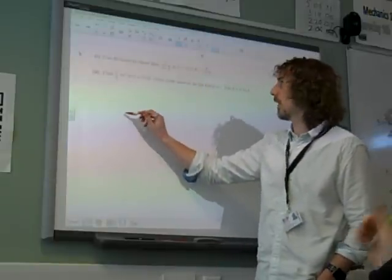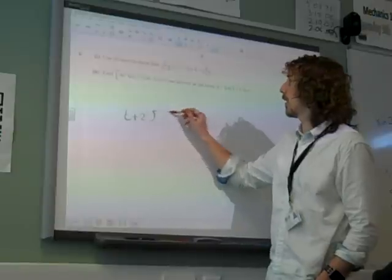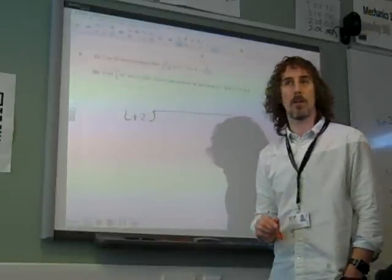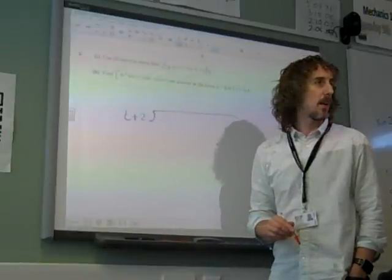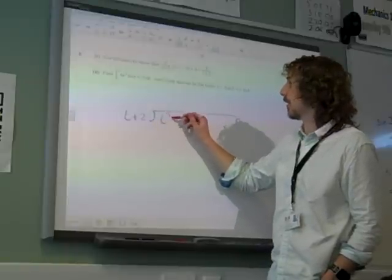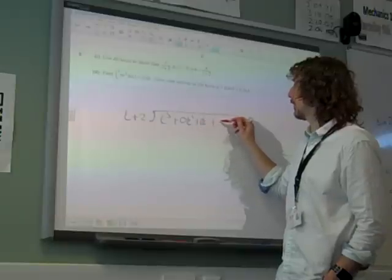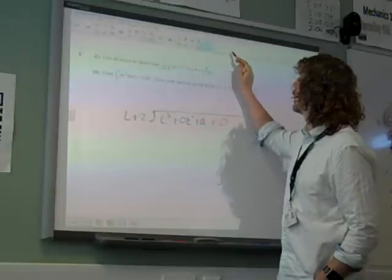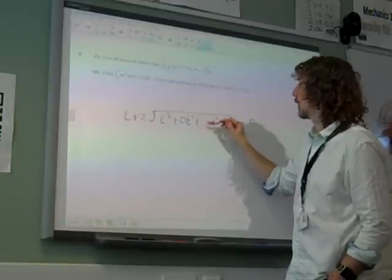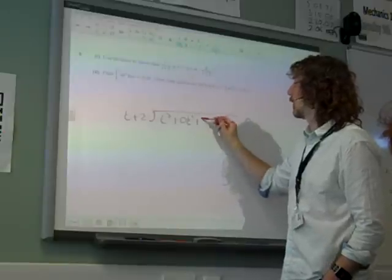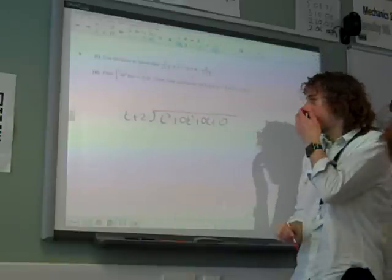Use division to show that t cubed over t plus 2 is equal to that. Well, I think we all did it with our method for doing long division and remembering that you need to have your zero coefficients in there, don't you? Zero t plus zero. There we go. So, it looks like that.